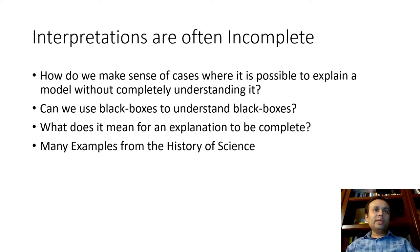So, different questions arise. How do we make sense of cases when it's possible to explain a model without completely understanding it? And there are a number of examples from physics that we can point to illustrate this. So, we highlighted the issue of using black boxes to understand black boxes. In certain cases, especially for quasi-explanations justified, but that's not always the case. And what is it meaning for an explanation to be complete? It may or may not be the case always.